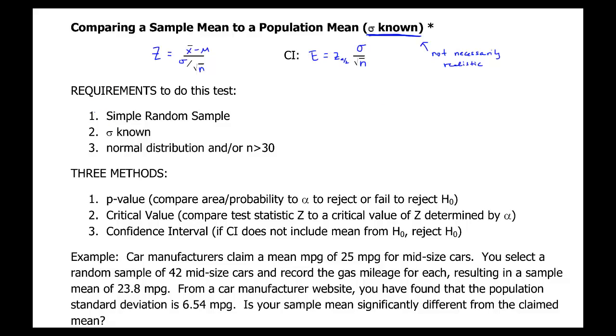So the requirements in order to do this, and you should check this for every problem that you do, you need to have a simple random sample, and I'll abbreviate that SRS. The population standard deviation needs to be known, and check your sample size. If it's greater than 30, you're okay. If it's not greater than 30, it should say something about a normal distribution somewhere in the problem. So make sure you check those for each problem.